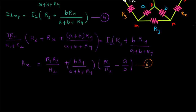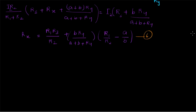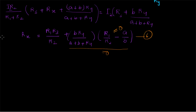Solving that equation gives RX equal to (R1 times R3) divided by R2, plus a correction term: (B times RY) divided by (A plus B plus RY), multiplied by (R1/R2 minus A/B). This is equation number 6. We assumed at the start that A/B equals R1/R2, which is the condition required for the balance of the bridge. If you apply that condition, the term (R1/R2 minus A/B) becomes zero, and the whole correction term vanishes, leaving RX equal to R1 R3 divided by R2.